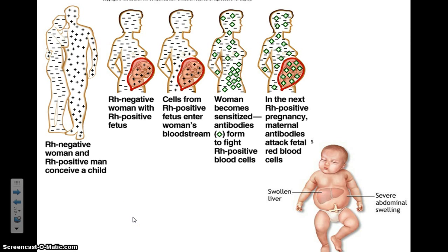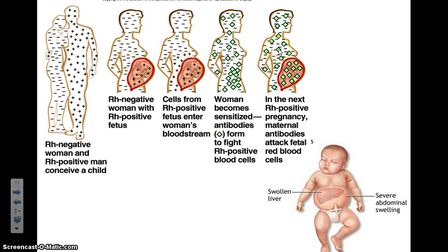Erythroblastosis fetalis is a condition due to the RH blood protein. An RH negative female has a child with an RH positive male, and the child will be RH positive. This first child is fine, except the mother becomes sensitized to her baby's RH positive blood, which she recognizes as foreign. She creates anti-RH positive antibodies. If the female has a second child, it will also be RH positive due to the parent's genetics. However, RH positive antibodies will cross the mother's bloodstream into the baby's body, attacking the baby's blood cells.